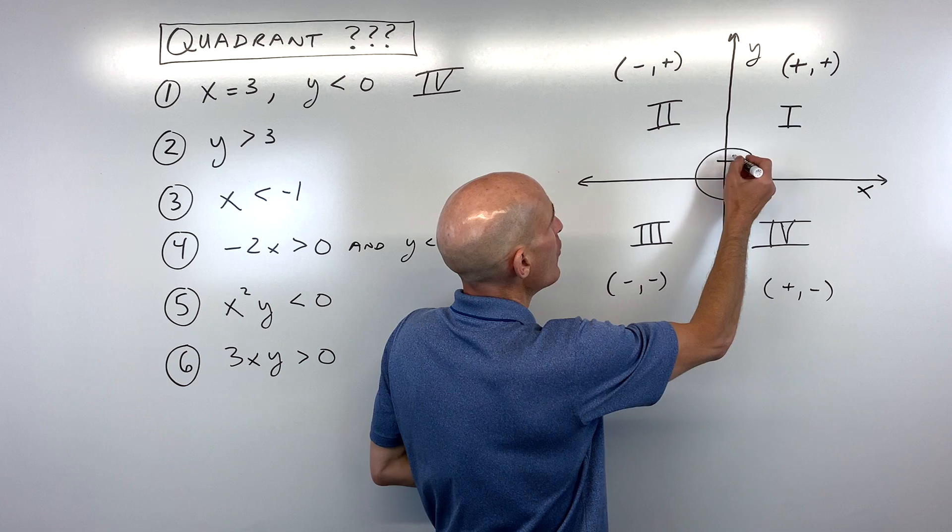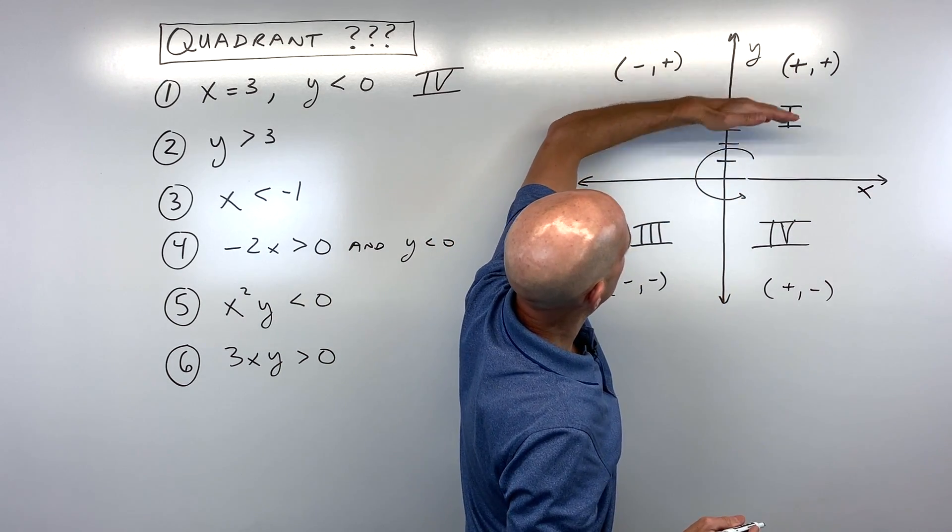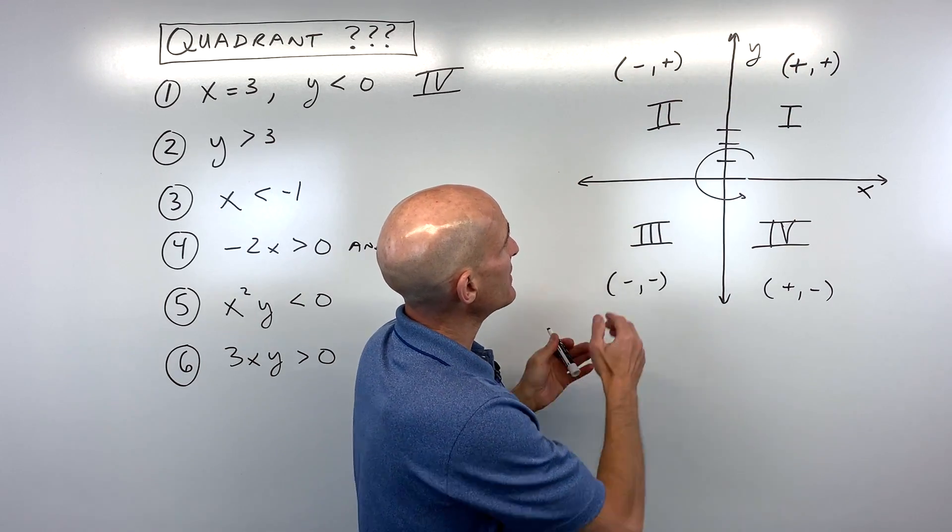So we can think about, okay, if we were to go one, two, three, so y is three actually greater than three, meaning above this, right?